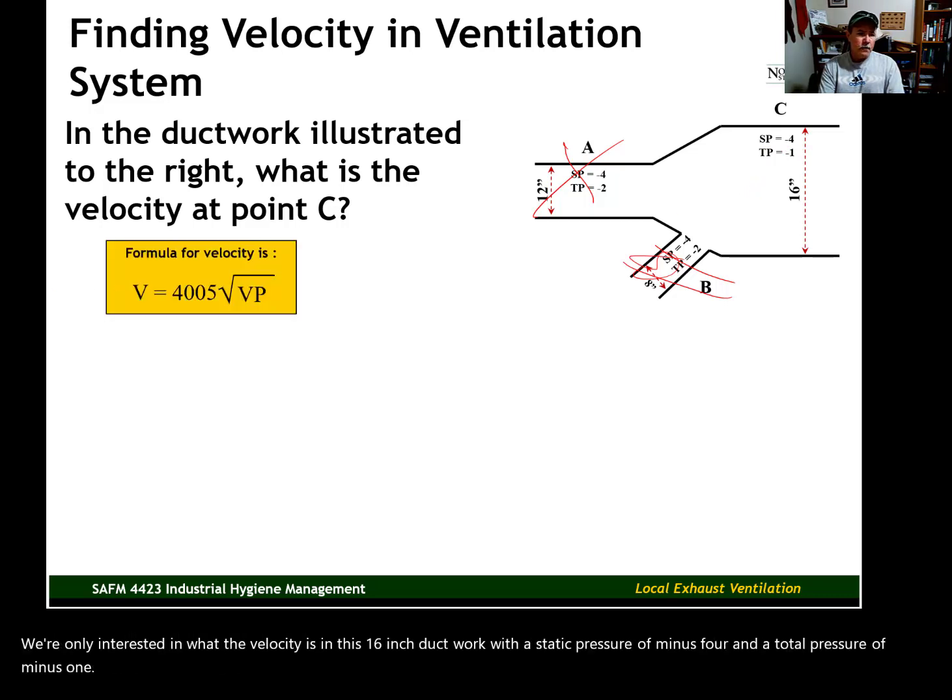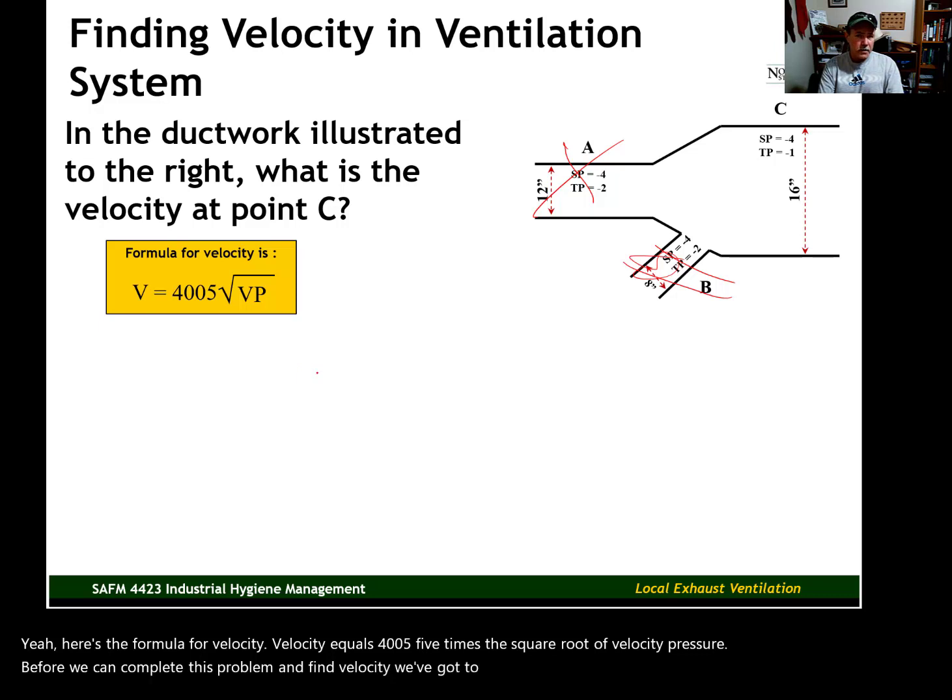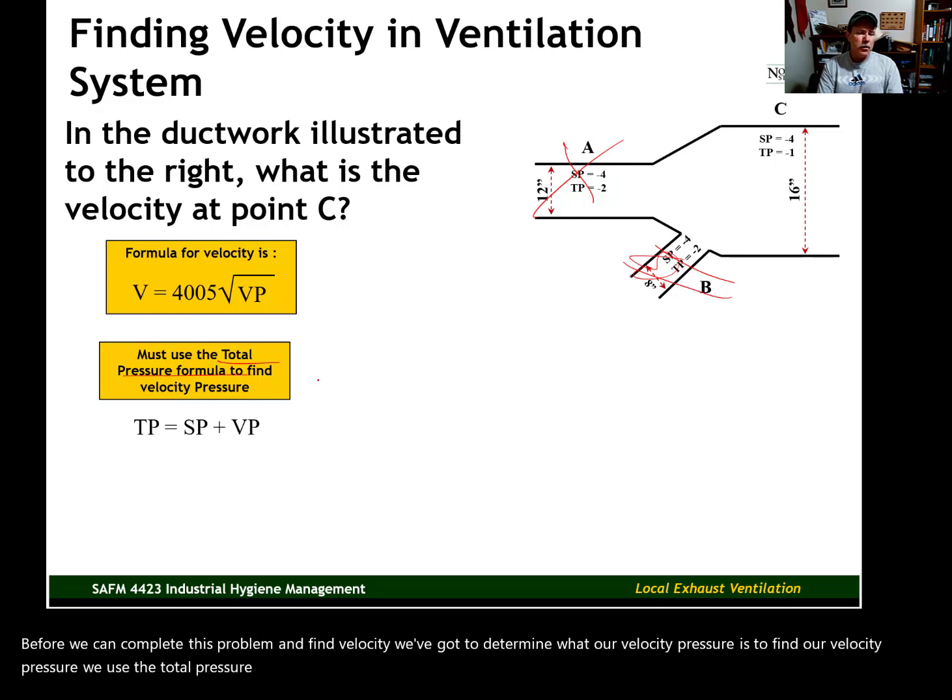Here's the formula for velocity. Velocity equals 4,005 times the square root of velocity pressure. Before we can complete this problem and find velocity, we've got to determine what our velocity pressure is. To find our velocity pressure, we use the total pressure formula that I showed you in a previous session.